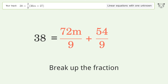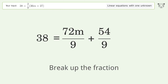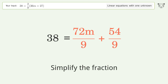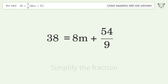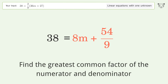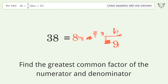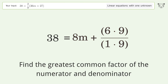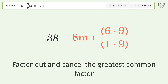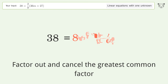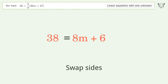Simplify the arithmetic. Break up the fraction. Simplify the fraction. Find the greatest common factor of the numerator and denominator. Factor out and cancel the greatest common factor.